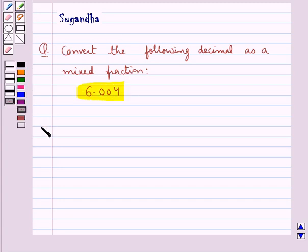Now let's see its solution. The given decimal number is 6.004. We need to convert this as a mixed fraction.